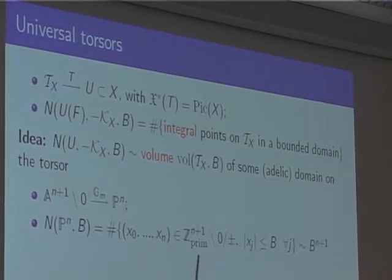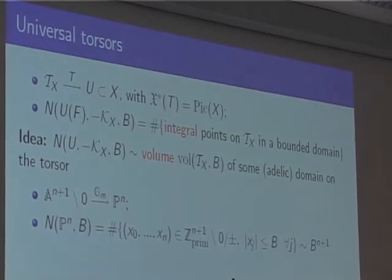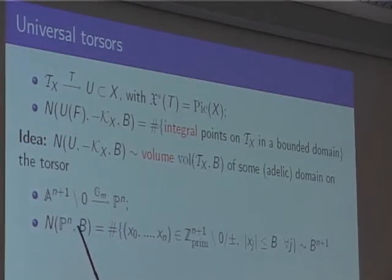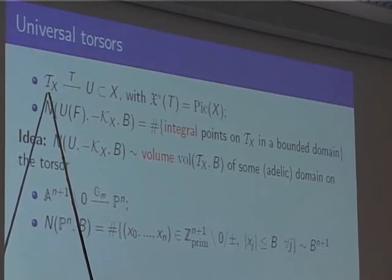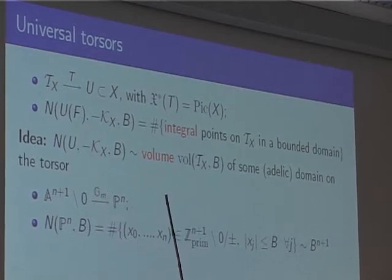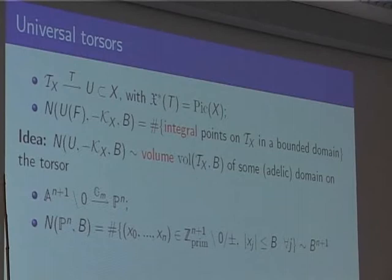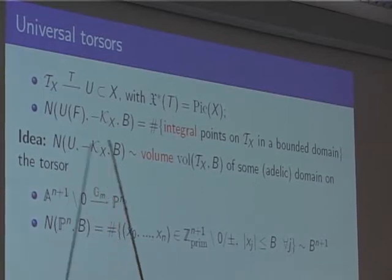If the characters of the torus are simply isomorphic to the Picard group — in our cases Pic is Z^r — we can look at the most obvious homomorphism, namely the isomorphism, and the corresponding torsor is the universal torsor. The idea is that rational points on X lift to rational, or actually integral, points on the torsor — almost unique representatives, just as on P^n where we look at integral points on A^{n+1} and pick primitive representatives.